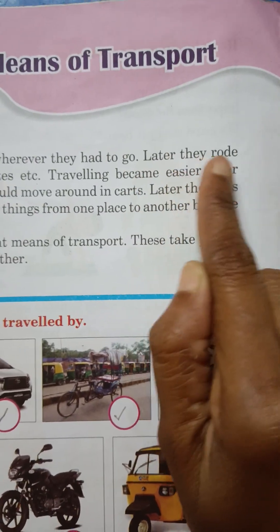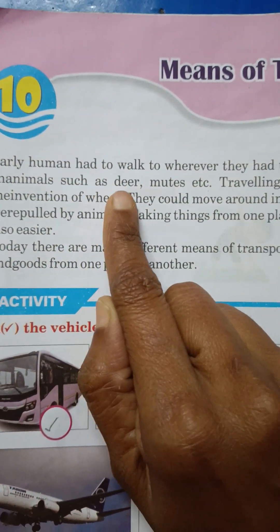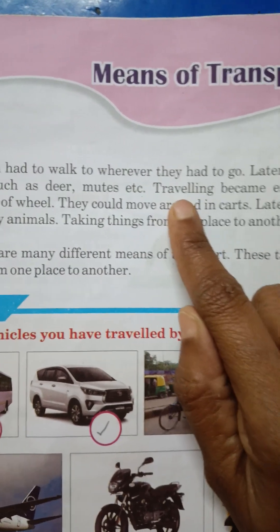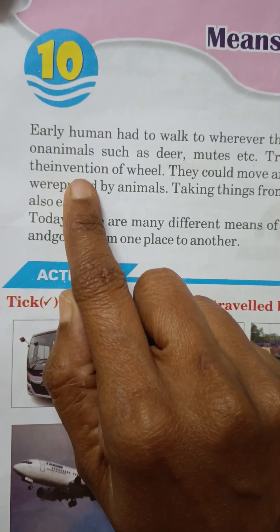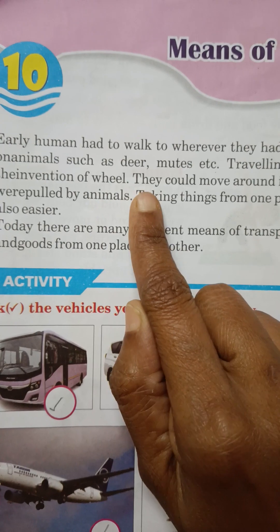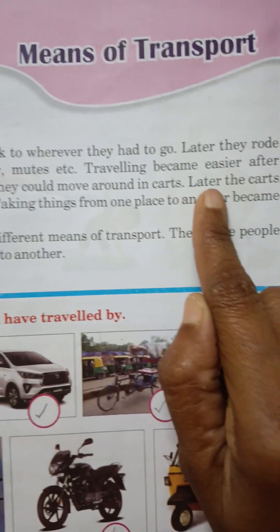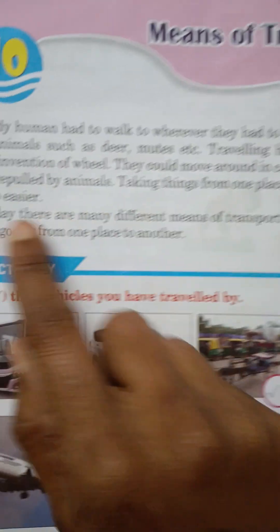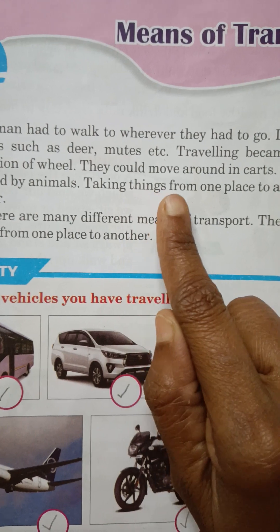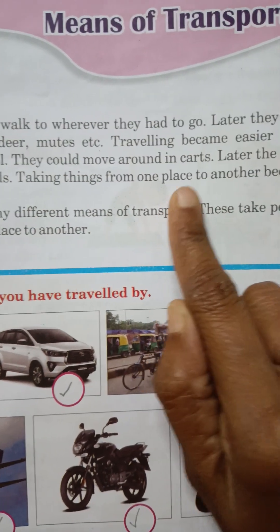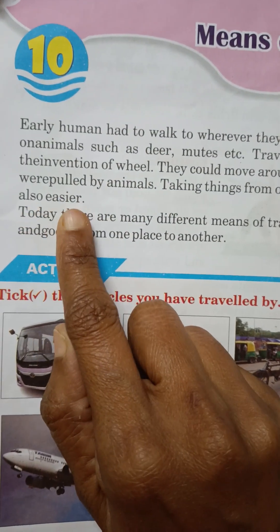Later, they rode on animals such as deer, mules, etc. Traveling became easier after the invention of the wheel. They could move around in carts. Later, the carts were pulled by animals, and taking things from one place to another also became easier.